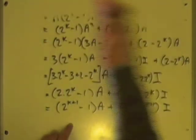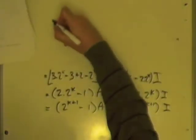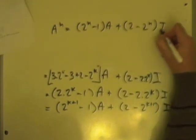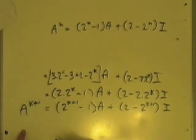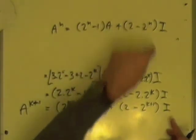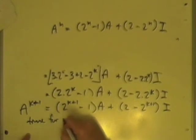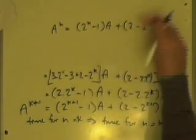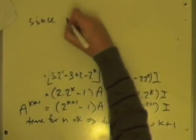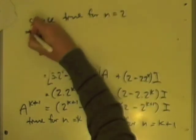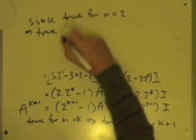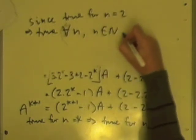This is exactly what the initial statement says. The initial statement says A to the n equals 2 to the n minus 1 times A, plus 2 minus 2 to the n times I. For A to the k plus 1, all the n's have been replaced by k plus 1's, which means if it were true for n equals k, then it is certainly true for n equals k plus 1. Since it was true for n equals 2, it is true for 3, and if true for 3 then true for 4, et cetera. Therefore it must be true for all n in the natural numbers where n is greater than or equal to 2, proving question 1.24 by induction.